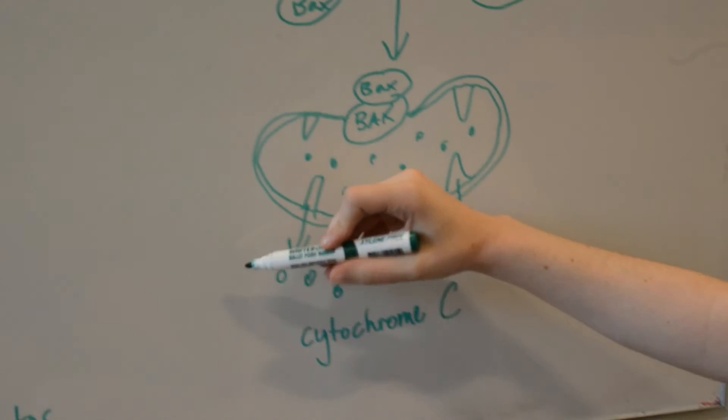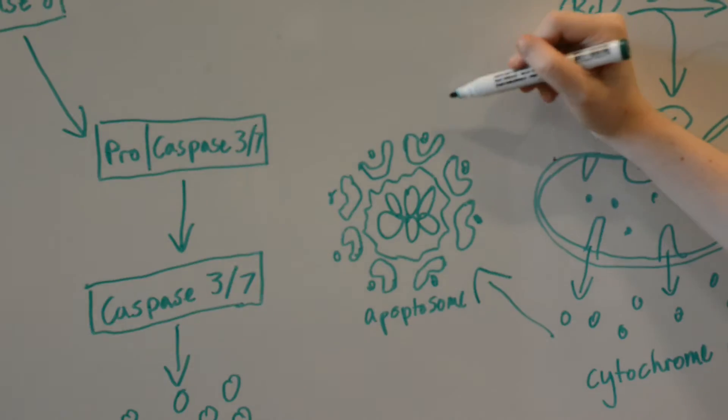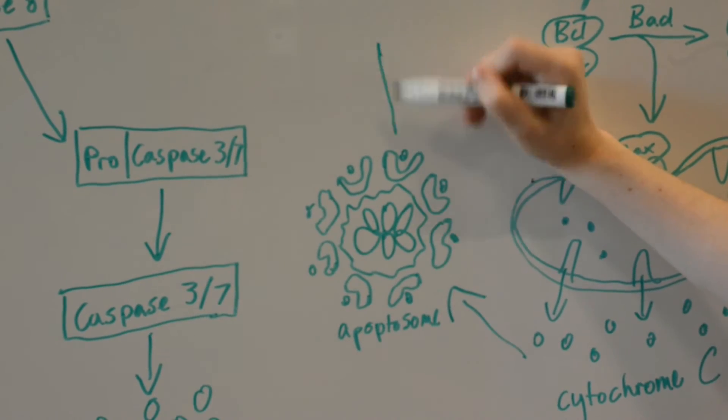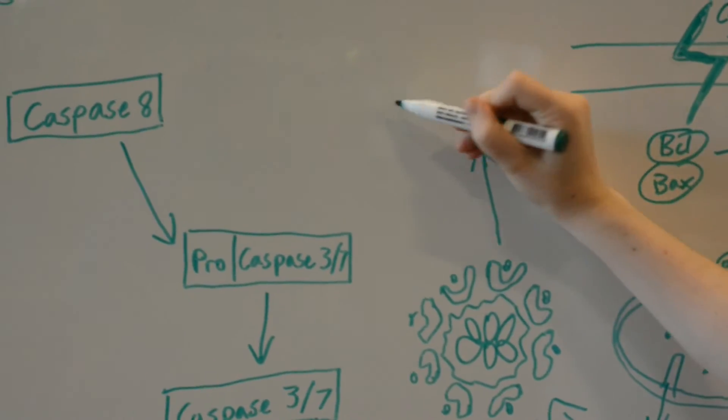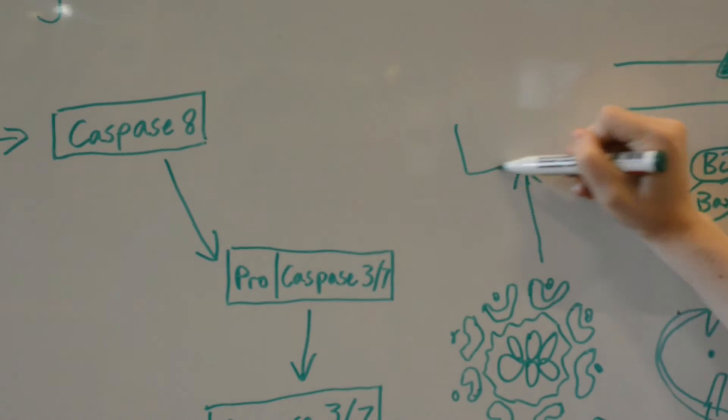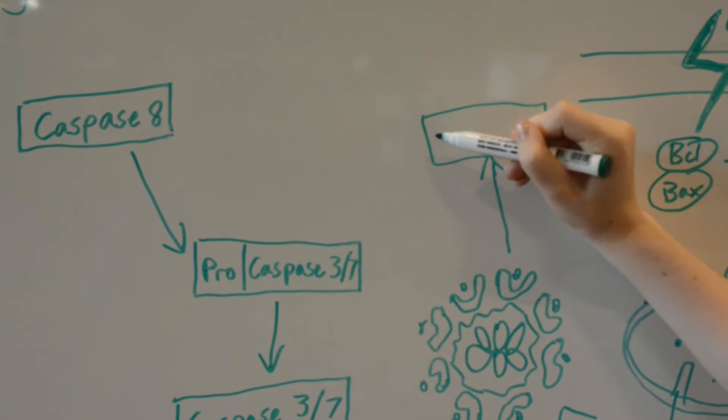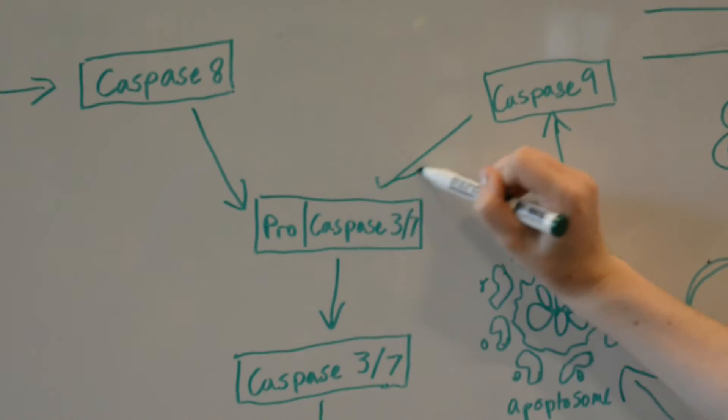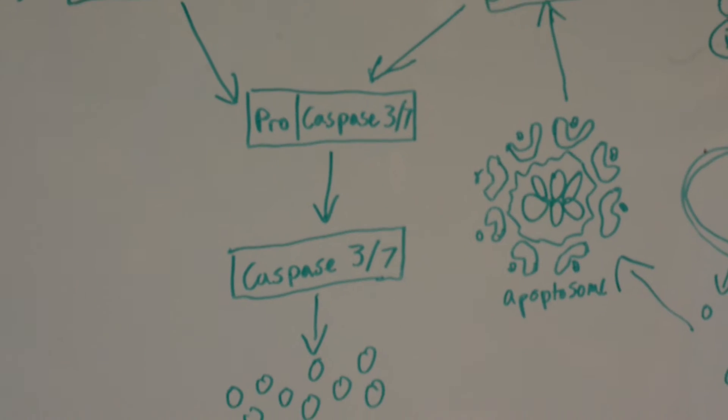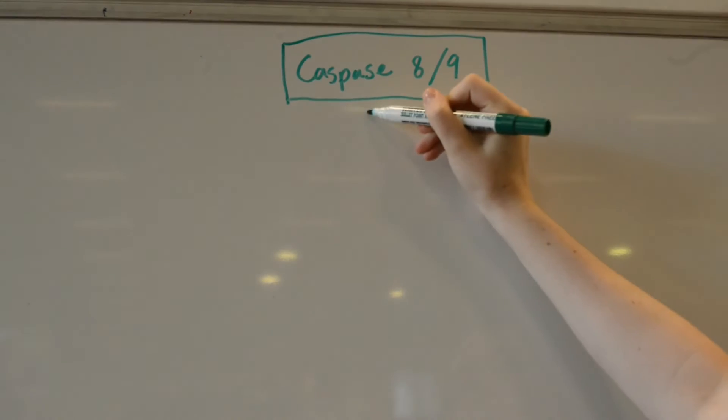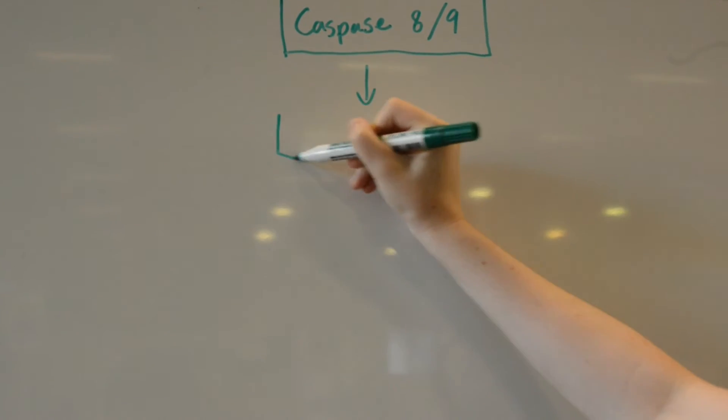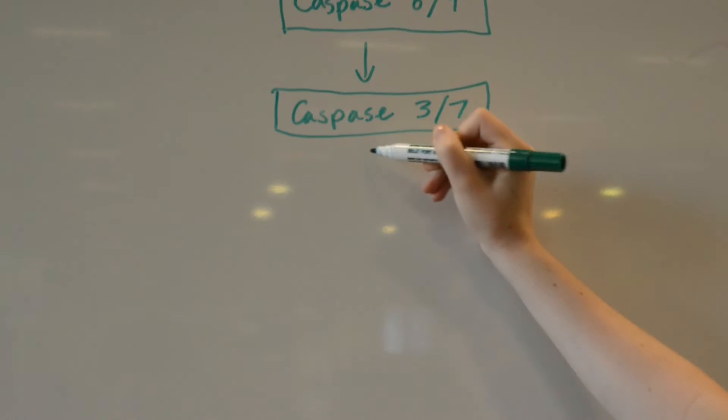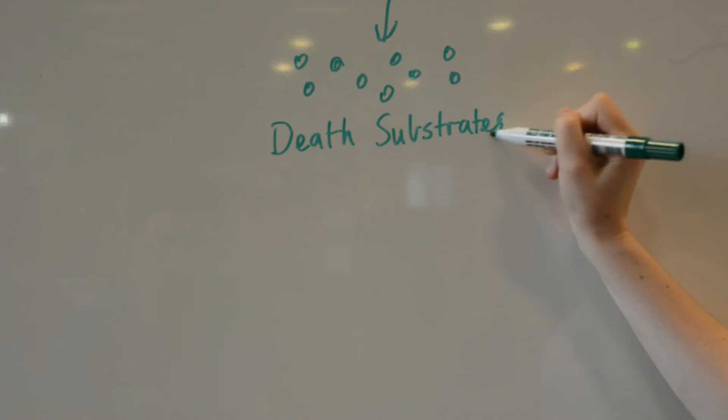The apoptosome complex is then formed by the interaction of cytoplasmic cytochrome C with APAF1, procaspase 9, and dATP. This complex will activate initiator caspase 9, which then activates the effector caspases 3 and 7 to induce apoptosis via the death substrates.